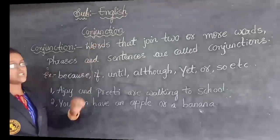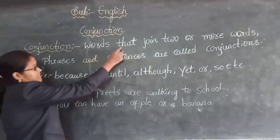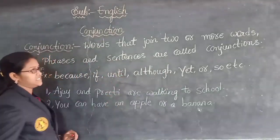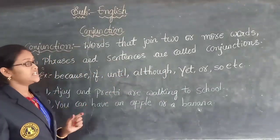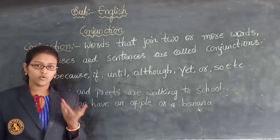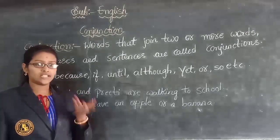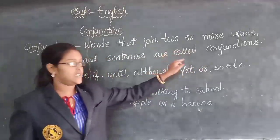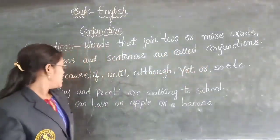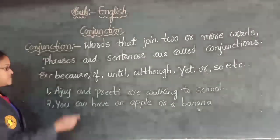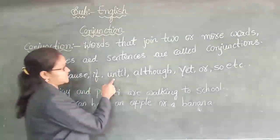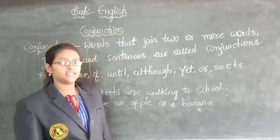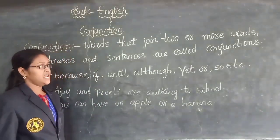Conjunction means nothing but words that join two or more words, phrases, and sentences. The type of words that join are called conjunctions. Some examples are: because, if, until, although, yet, or, so, etc. These are some words which come under the conjunction.